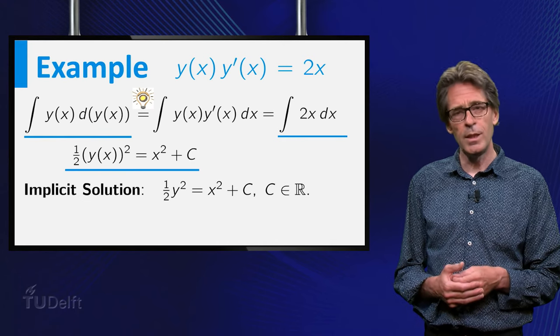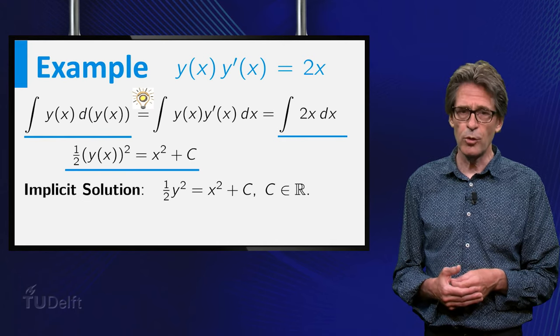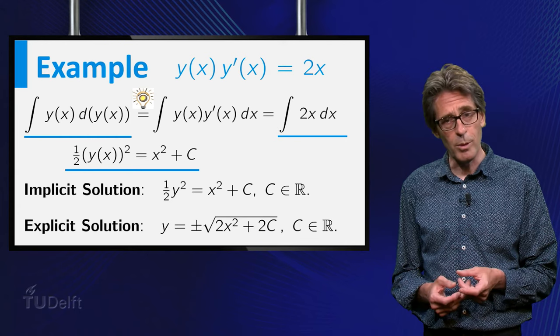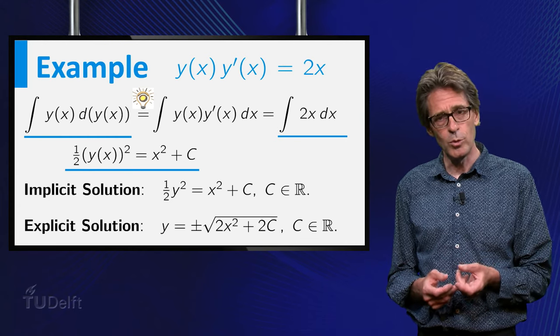In this case, it can be rewritten in the explicit form y equals plus or minus the square root of 2x squared plus 2c.